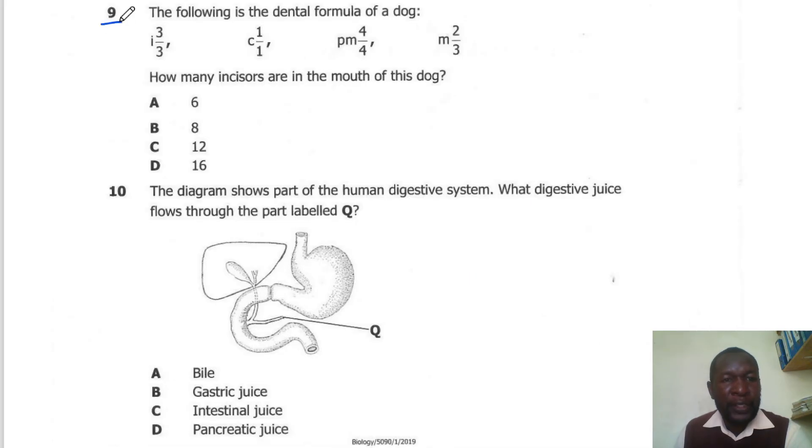Question 9. The following shows the dental formula of a dog. How many incisors are in the mouth of this dog? To calculate the number of incisors, we add the number of incisors, then multiply by 2. So that would give us 12. So the correct answer here is C.